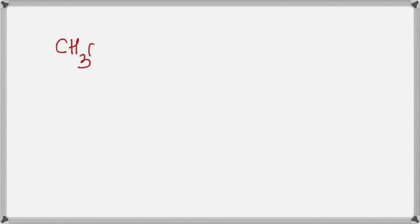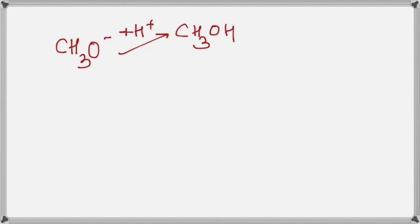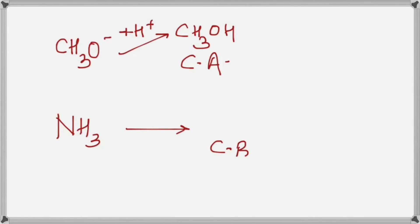Let's take more examples. If I give you CH₃O⁻ and ask for its conjugate acid, you add H⁺ and get CH₃OH, which is the conjugate acid of CH₃O⁻. Now take NH₃ and find its conjugate base: for the conjugate base you subtract an H⁺, and because an H⁺ went away there will be a minus charge, giving you NH₂⁻. That's how you get conjugate acids and conjugate bases.